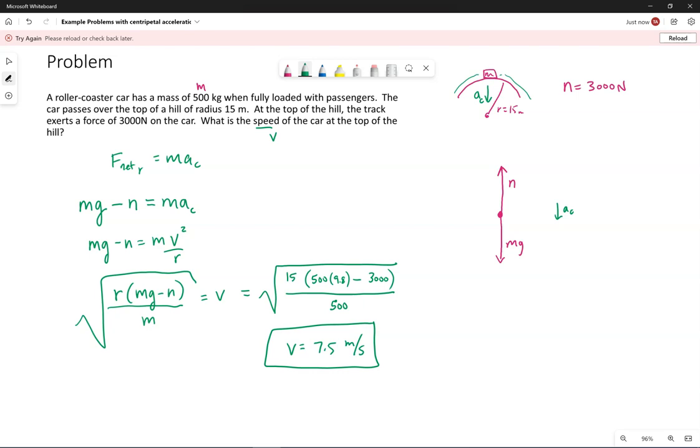Same process. Free body diagram. Write out F equals MA. What we mean by that symbolically. Big thing here is to remember if there's any sort of change in direction, we need to account for the centripetal acceleration. And we need to make sure we're accounting for its direction properly.